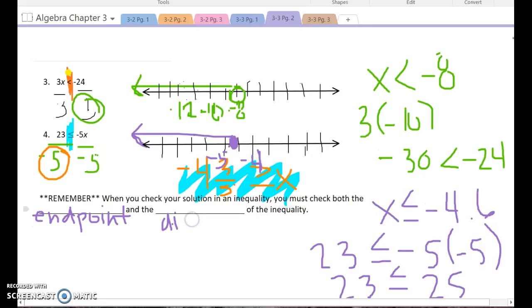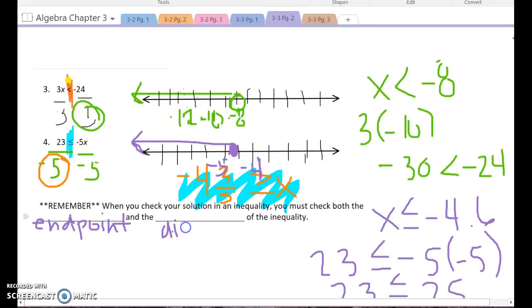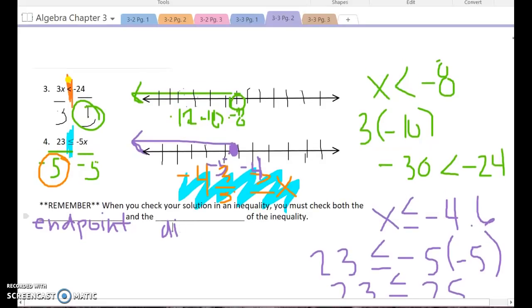So I have modeled some of that here as I worked through this. So if I had said my answer was supposed to be x is less than three, I would have to check both three and I would have to check something that was a number that was less than three. Then I'll know I've got all the right parts.